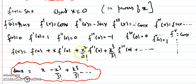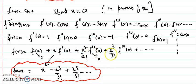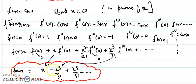Writing out the series: f(0) is 0 so there is no constant term. f'(0) is 1 so we get x. f''(0) is 0 so that term vanishes. The cubic term comes with a minus sign. The fifth term is positive. So sin x equals x minus x cubed over 3 factorial plus x to the 5 over 5 factorial minus x to the 7 over 7 factorial. This is the standard formula for sin x in powers of x, with alternating signs and odd powers.